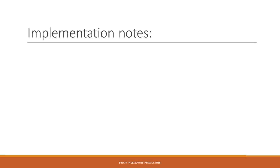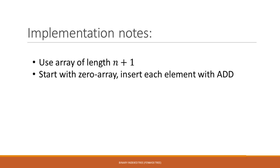Here are a few implementation notes. As mentioned, we use 1-indexed notation because the trick only works with 1-indexed notation. So we simply use an array of length n+1. The first element at position 0 — we don't care about it, simply ignore it. For initialization, we can use a simple approach: start with a zero array and insert each element using the add method. Each add takes about O(log n) time, so initialization takes O(n log n), which is mostly fast enough. There is also a linear algorithm — you can find it in the description if you want.